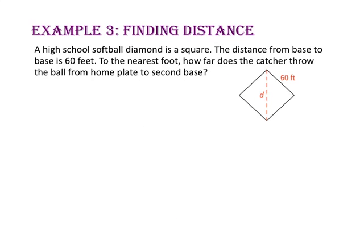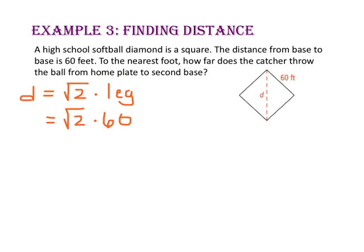In example 3, we will find distance. A high school softball diamond is a square. The distance from base to base is 60 feet. To the nearest foot, how far does the catcher throw the ball from home plate to second base? Since the diagonal of a square bisects the angles, we have a 45-45-90 triangle, and the hypotenuse is the square root of 2 times the length of a leg. Since the leg is 60, we substitute 60. In real life we don't give distances in radical form, so we use the calculator: the square root of 2 times 60 is approximately 84.85, so the distance from home plate to second base is approximately 85 feet.